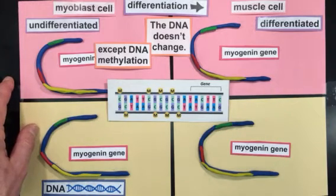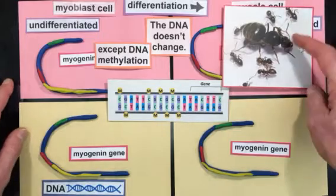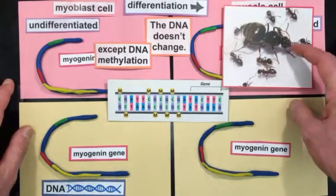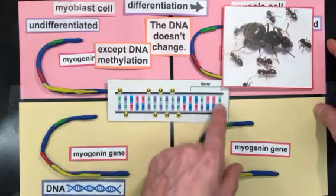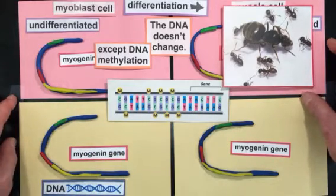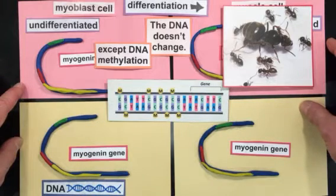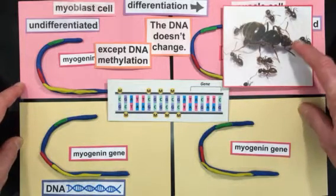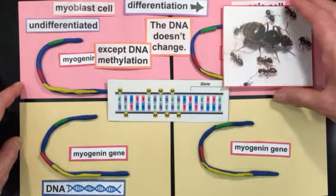Here's one example to emphasize how important DNA methylation is: a queen ant and worker ants. They're identical twins — they have the same AGCT nucleotide sequence in their DNA — but they differ in the pattern of DNA methylation. The queen has a different DNA methylation pattern because of the food she was fed when she was a larva.